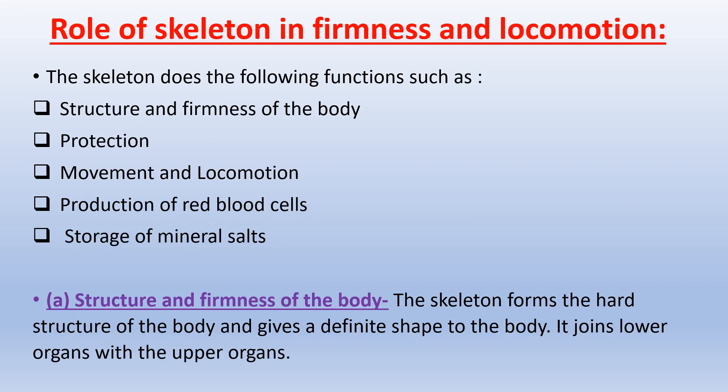Role of Skeleton in Firmness and Locomotion: The skeleton performs the following functions — structure and firmness of the body, protection, movement and locomotion, production of red blood cells, and storage of mineral salts. The skeleton forms the hard structure of the body and gives a definite shape to it. It joins lower organs with the upper organs.